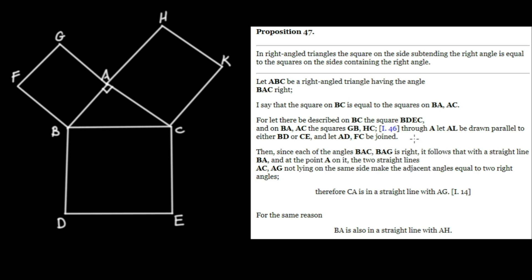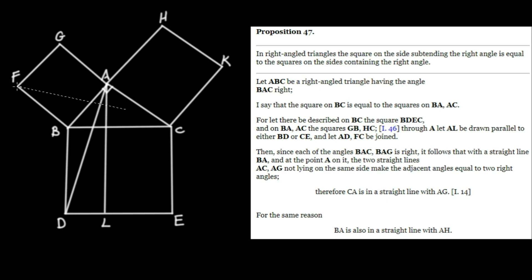Now, through A, let AL be drawn parallel to either BD or CE. So we're going to connect A down to L, down here. This point down here is going to be L. And we're going to let AD and FC be joined, giving us AD and FC.